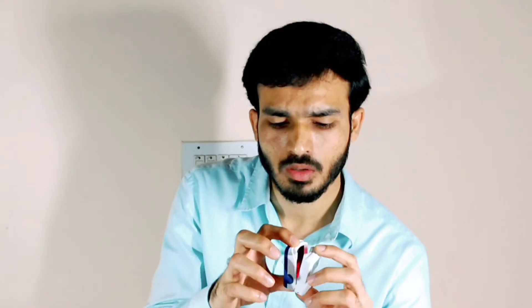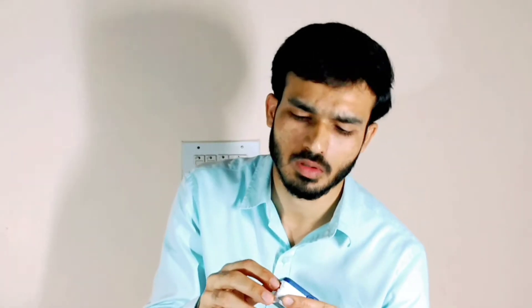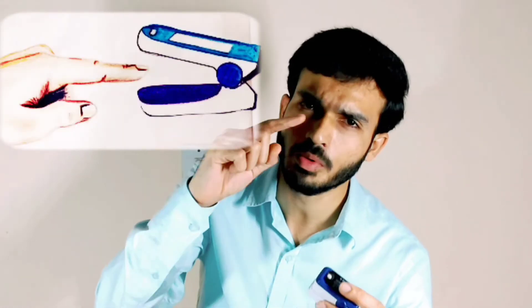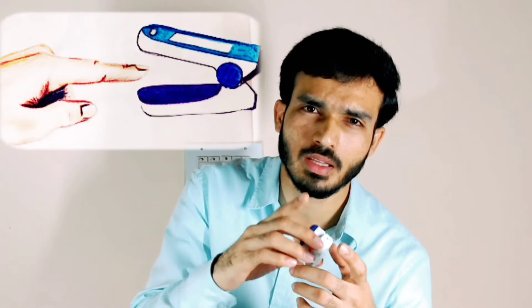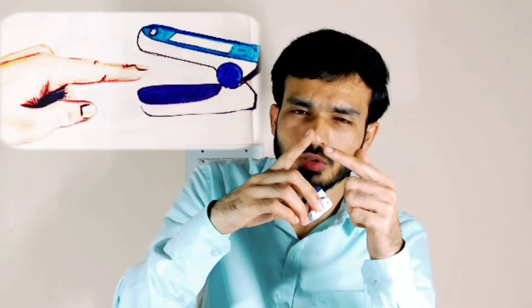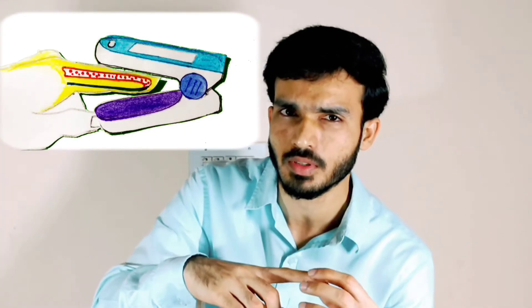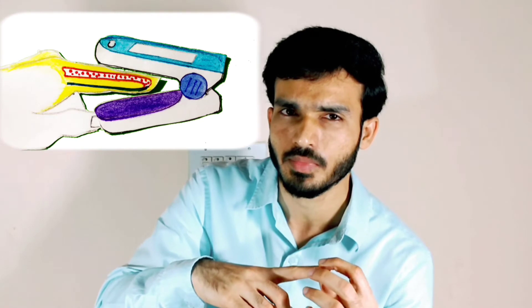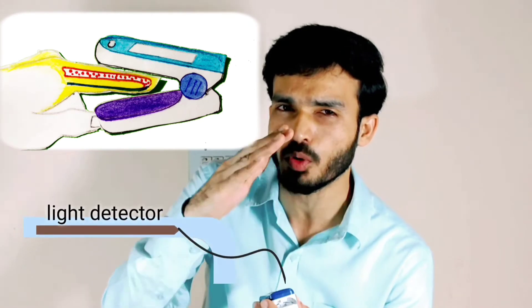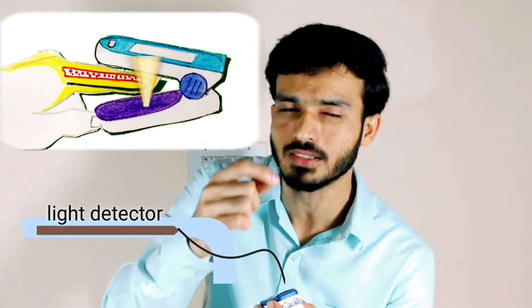This light is the red color you can see. When you keep your finger on the light, the light passes through the finger and on the opposite side of the finger, there is a probe that detects that light.